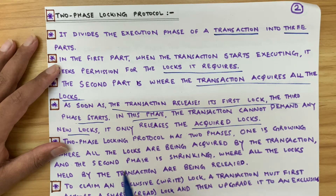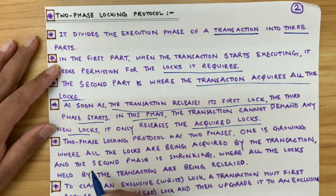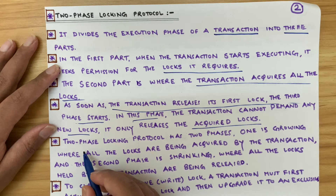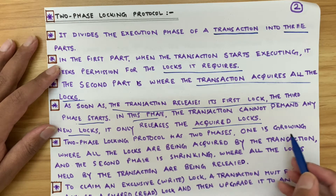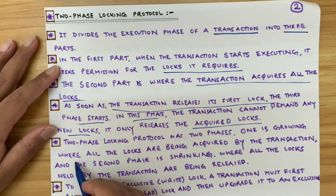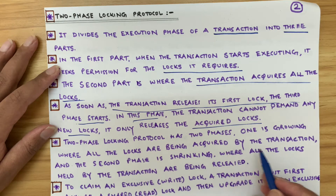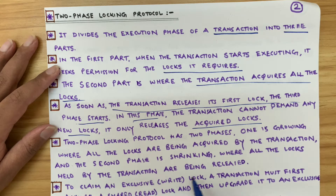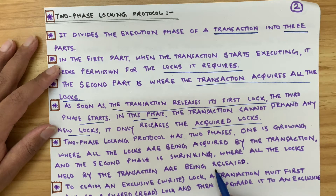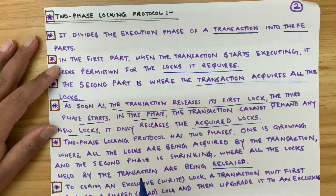Two-phase locking protocol has two phases: one is the growing phase, where all the locks are being acquired by the transaction, and the second phase is shrinking, where all the locks held by the transaction are being released.